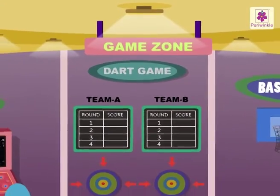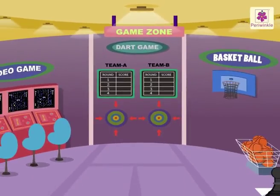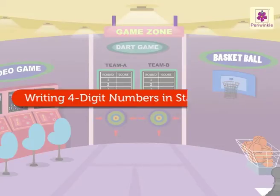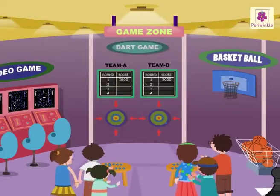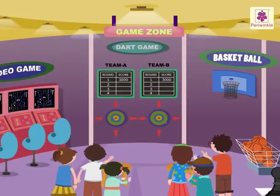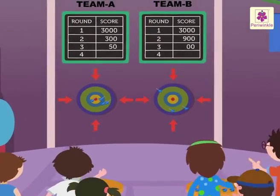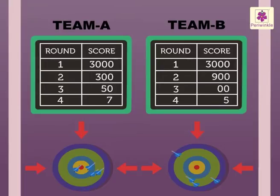Welcome to the game zone! Let us learn how to write four-digit numbers in standard form. Look at the kids playing the dart game — there are two teams playing, and each team played four rounds.